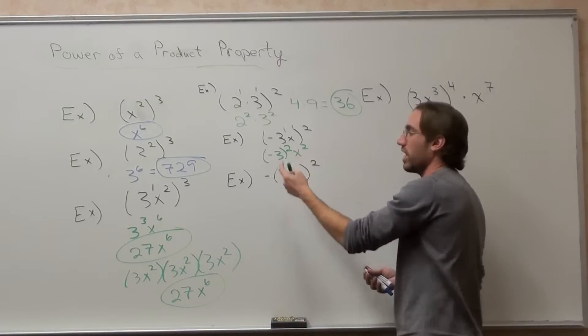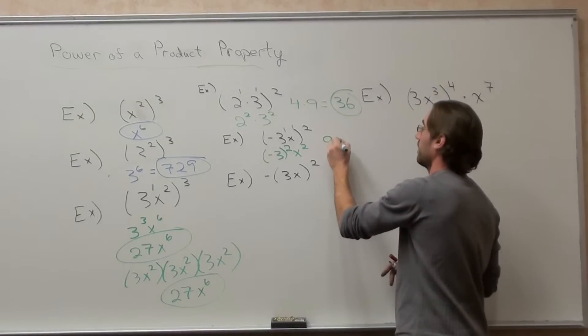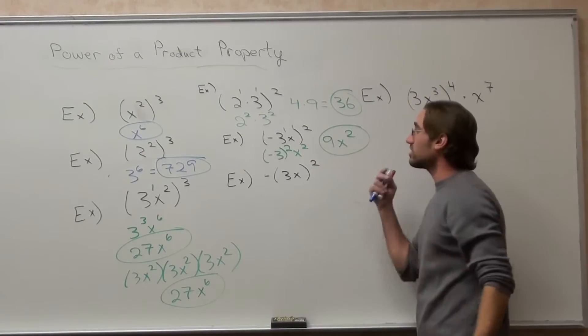So negative 3 squared is negative 3 times negative 3, which is 9. And I got an x squared. So that answer is 9x squared.